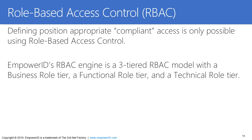EmpowerID's role-based access control engine is a three-tiered role-based access control model. The top tier is the business role tier, which typically maps to what a person does in the organization. The middle functional role tier is more dynamic — teams that users are participating on, projects they're working on, or bundles of access to perform tasks. The lowest level is the technical role tier, which ties together the access you're modeling and the delivery of that access as technical entitlements, application roles, or groups in external systems or permissions.